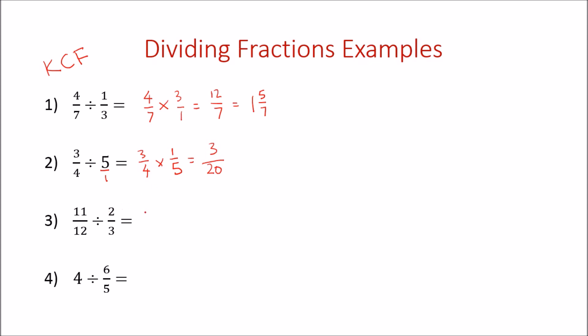11/12, so let's keep that the same, change our sign, flip our second fraction, and let's go 11 times 3 is 33, 12 times 2 is 24. Can we simplify this? We can't simplify it with the number 2 because this is an odd number. What about 3? Are both of these in our three times tables? Hopefully you can see that they are.